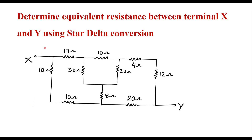In this video, let me consider one numerical on star-delta transformation or conversion. Determine the equivalent resistance between terminal X and Y using star-delta transformation. This is the given circuit. Here we have terminal X and here we have terminal Y, and we are supposed to find the equivalent resistance between these two terminals.